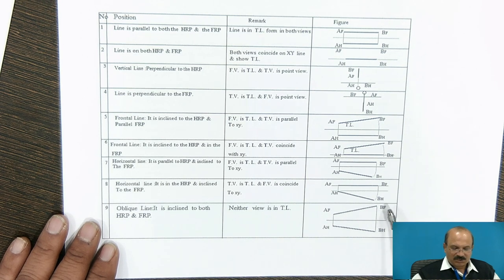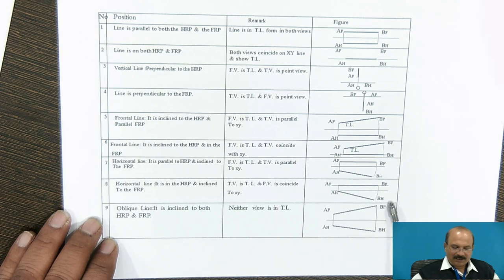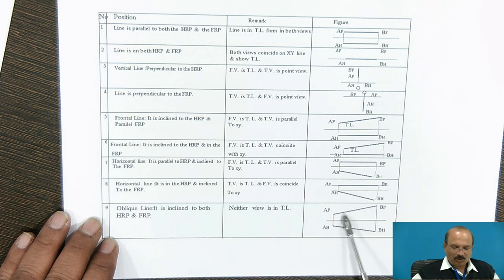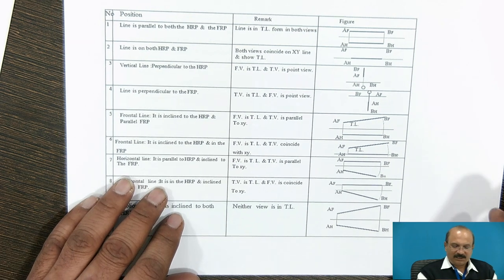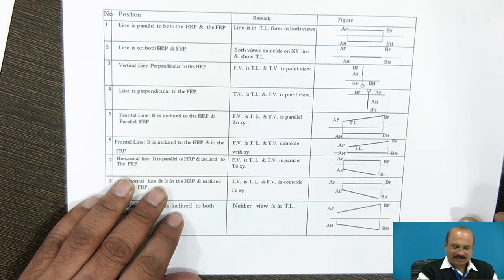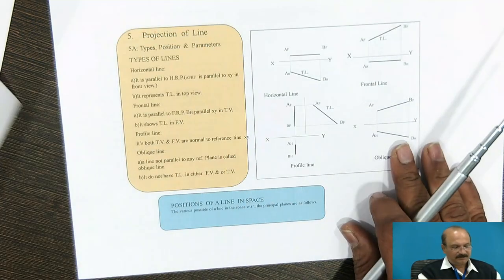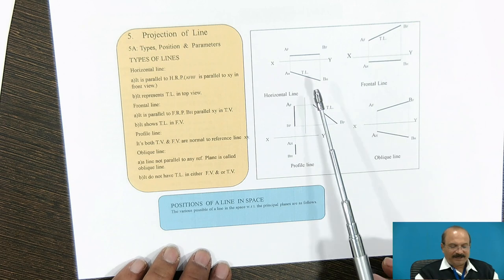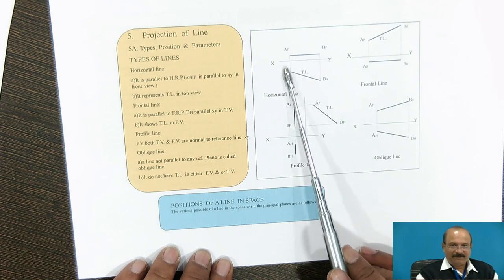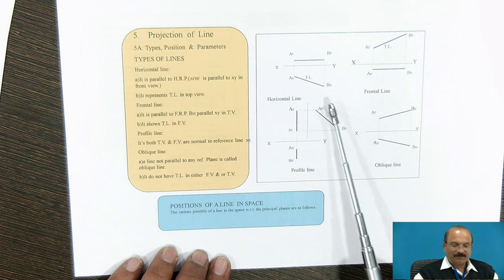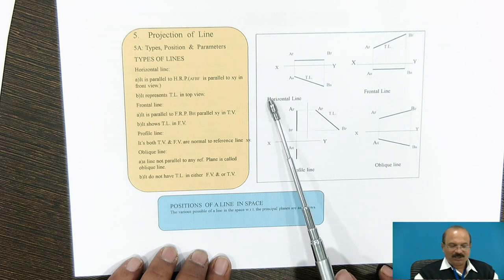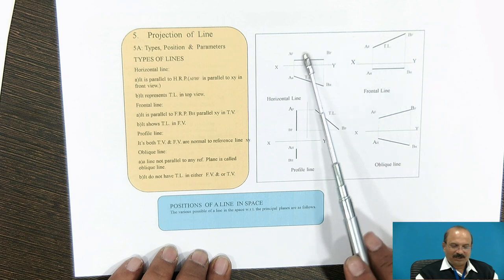Now our main intention is to study different types of problems related with this diagram — the oblique line. It is inclined to both horizontal plane as well as vertical plane. In the previous lectures, you studied how exactly the angle is taken in the HP and VP, and the representation of the line. You should have knowledge of this particular diagram for problems that give a horizontal line or frontal line.